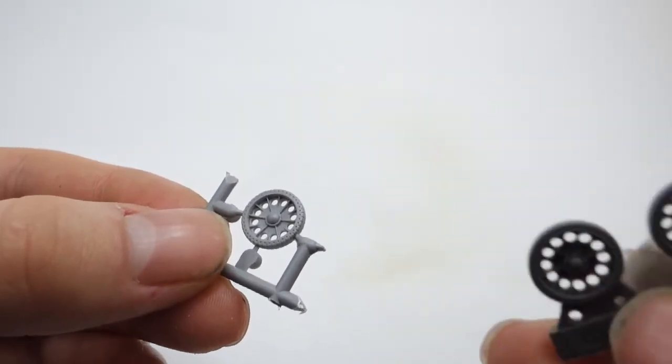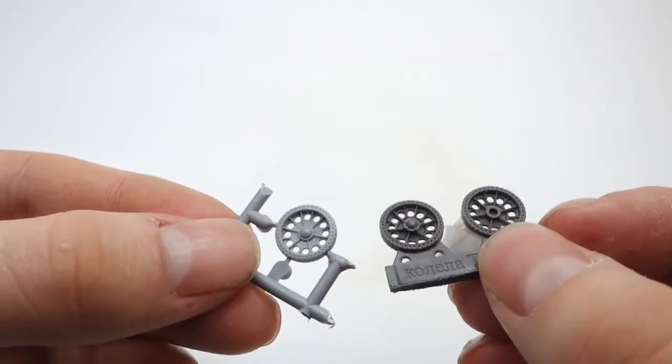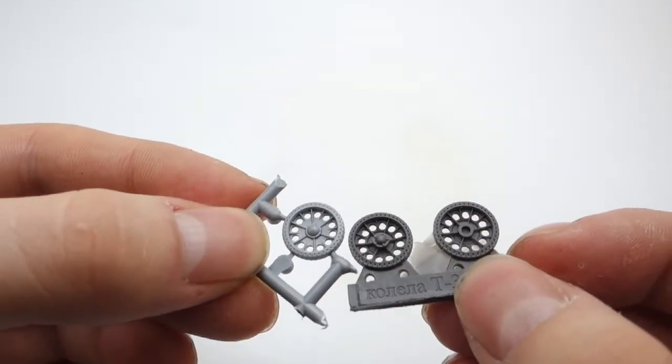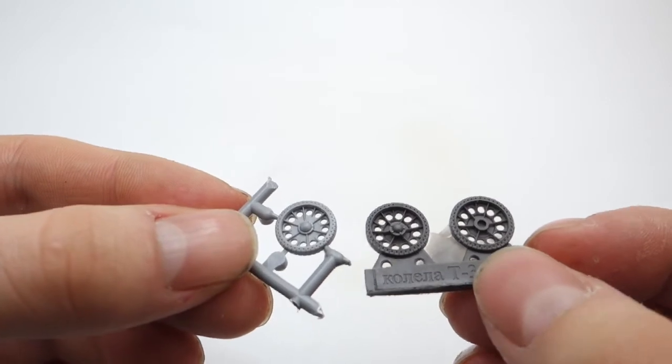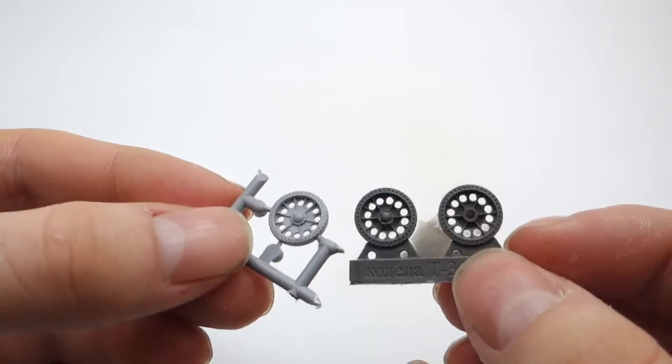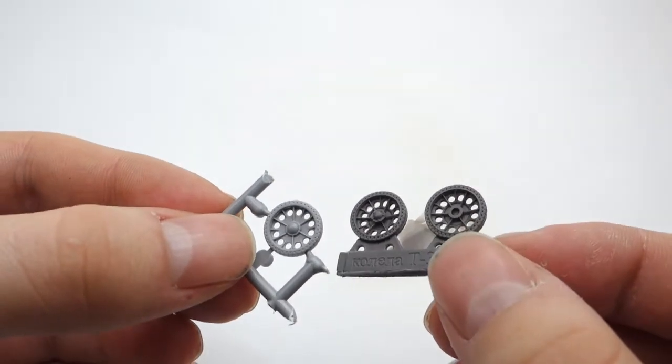Here you can see difference between kit wheel and its aftermarket replacement. Those two pieces replicate the same type of wheel, but the one from OKB has much better and correct detail.